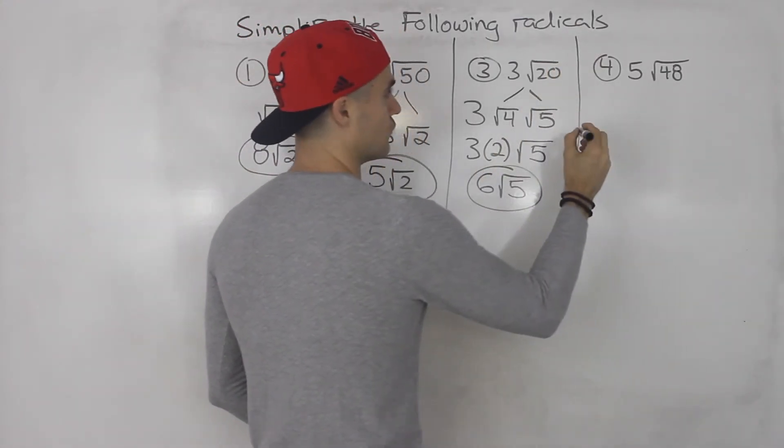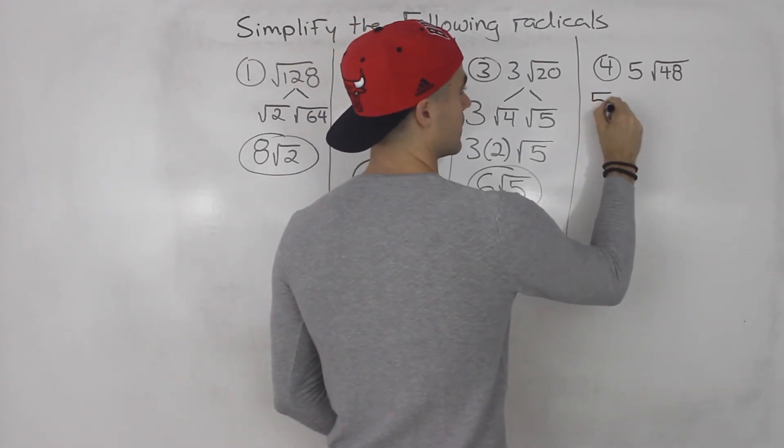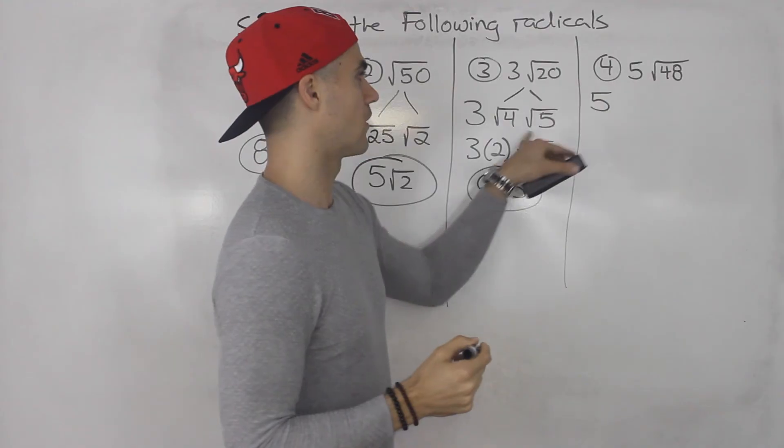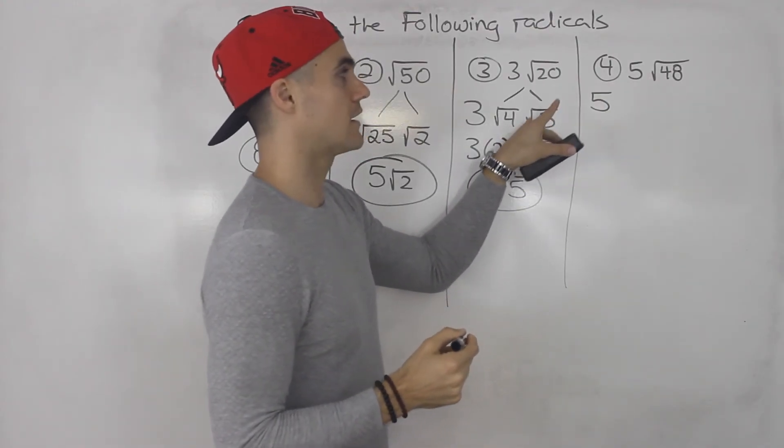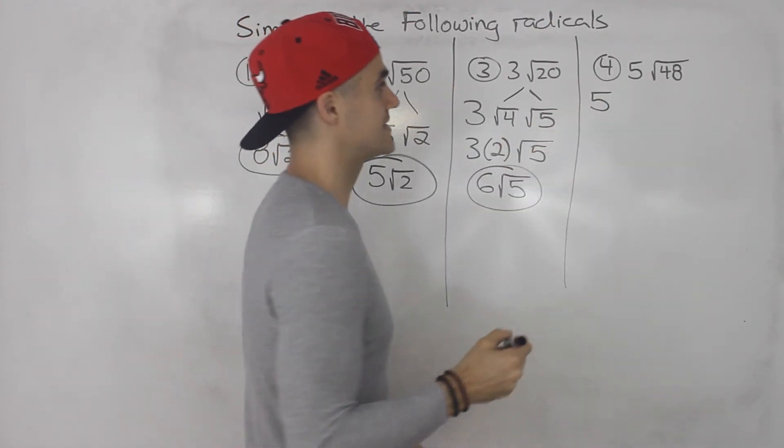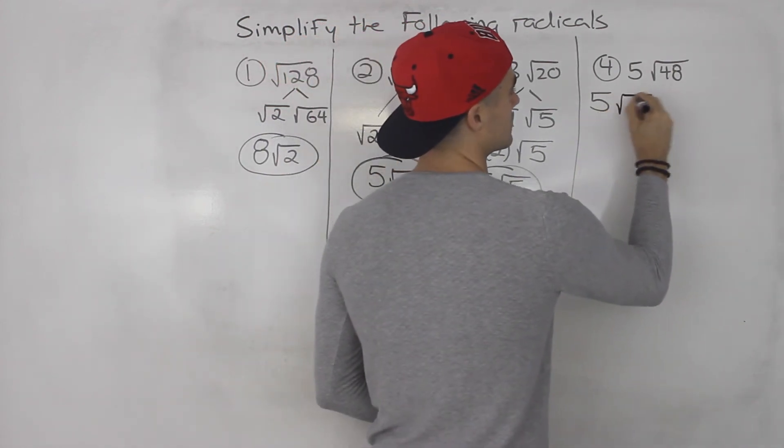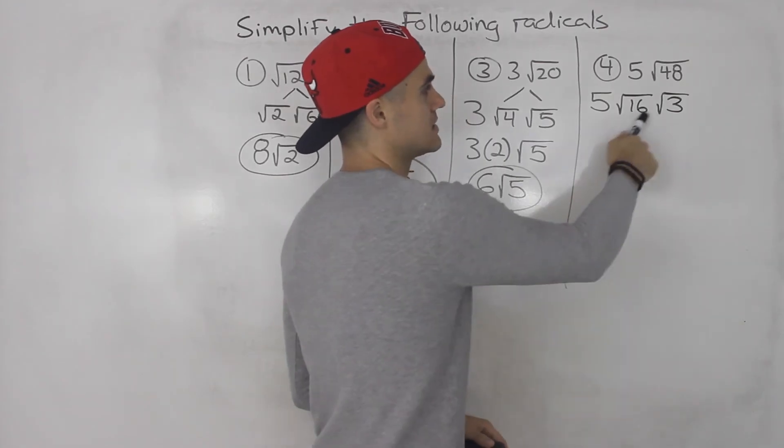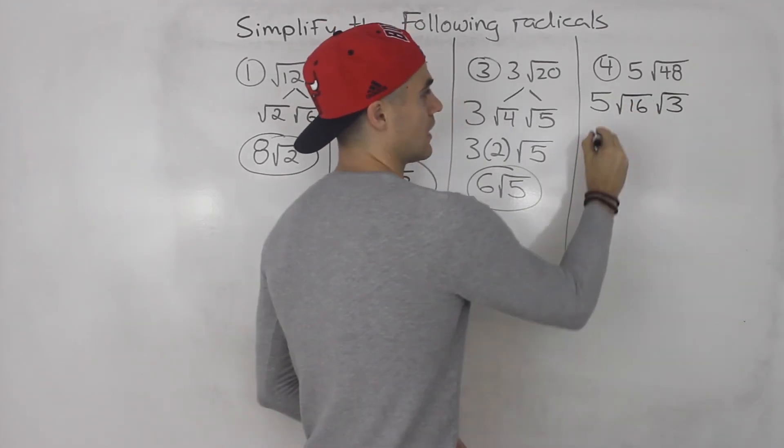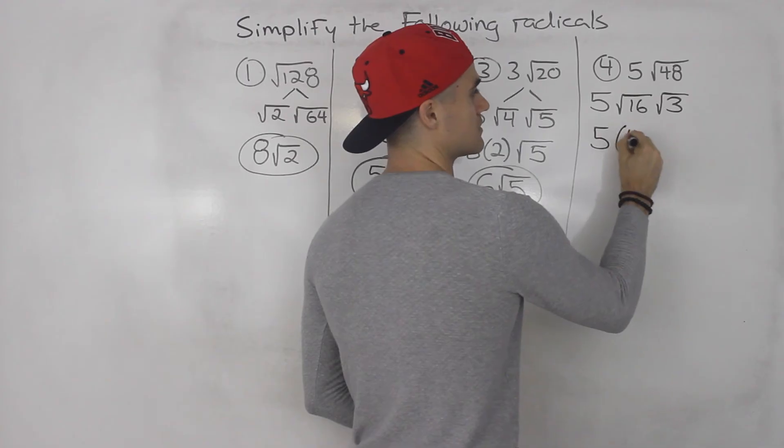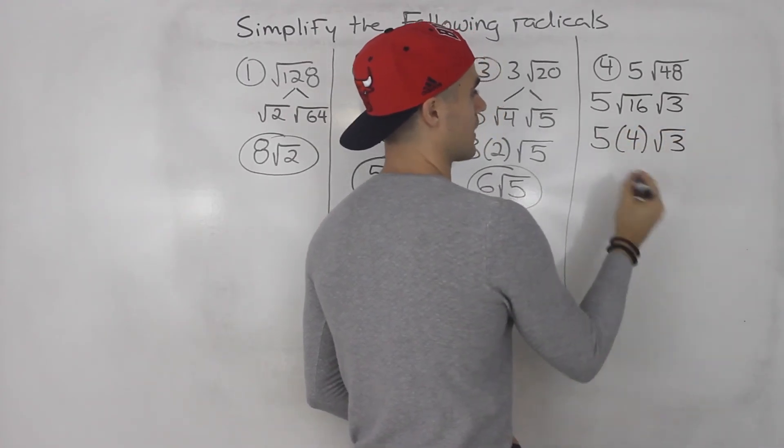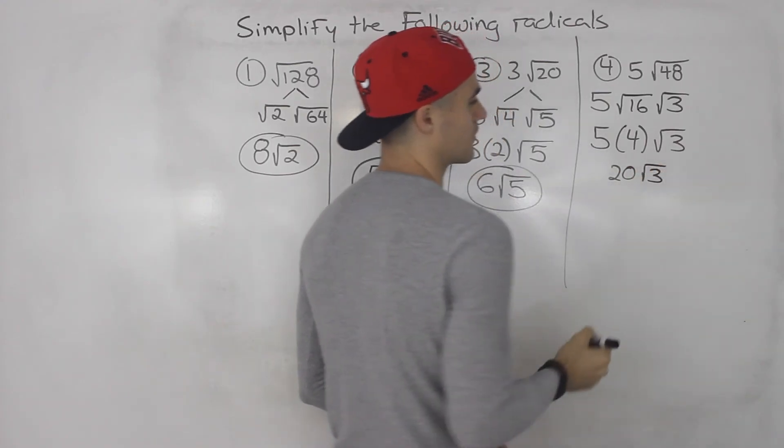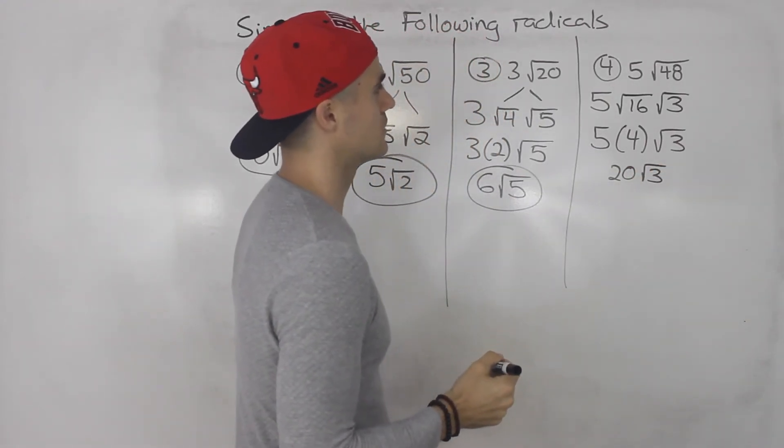And then 5 root 48. What can we split up the root 48 by? Well, we can split it up into 4. That's one rootable number. But an even higher rootable number is 16. We'll split this up into root 16 and root 3. 16 times 3 gives us 48. And what's the square root of 16? It's 4. Root 3, can't do anything about that. 5 times 4 gives us 20. Root 3. Right? So that's the quickest way to do it.